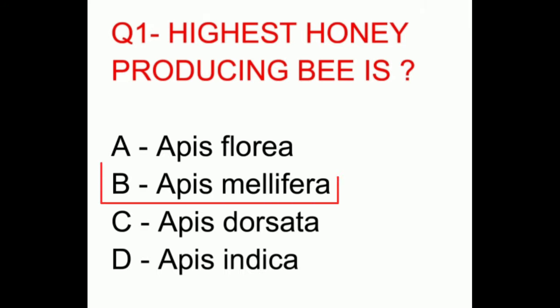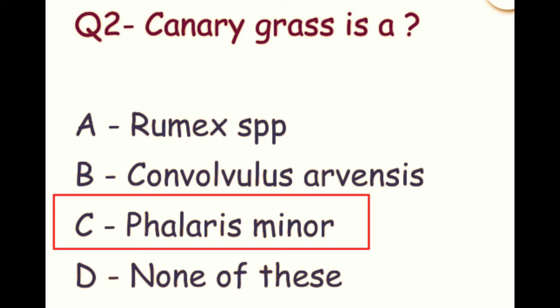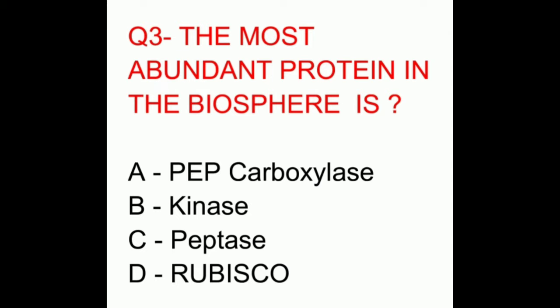Question number two: canary grass is also known as. The options are Rumex species, Convolvulus arvensis, Phalaris minor, or none of these. The correct answer is Phalaris minor.